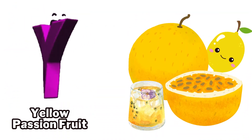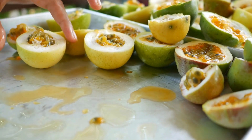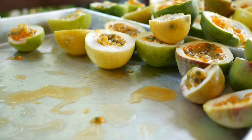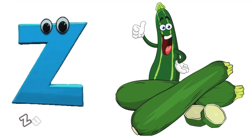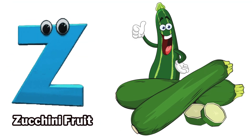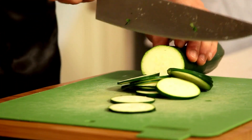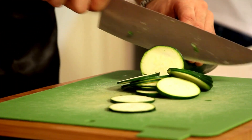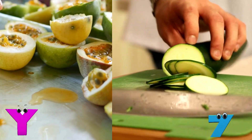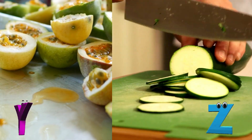Y is for yellow passion fruit, yeah, yellow passion fruit. Z is for zucchini fruit, z-z-zucchini fruit.